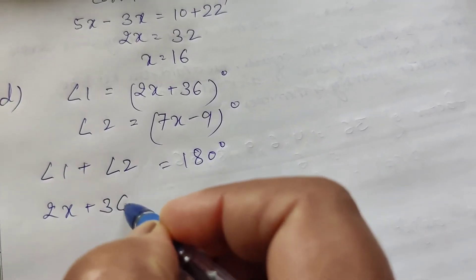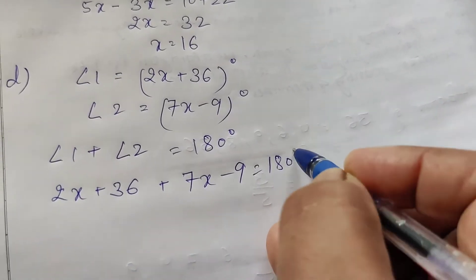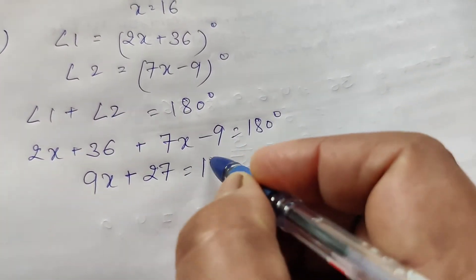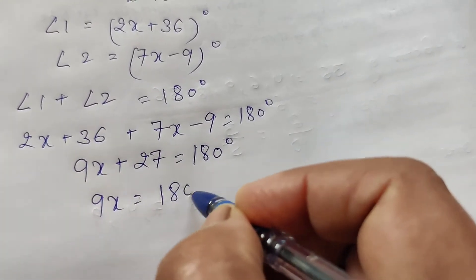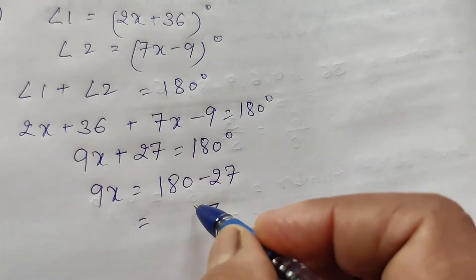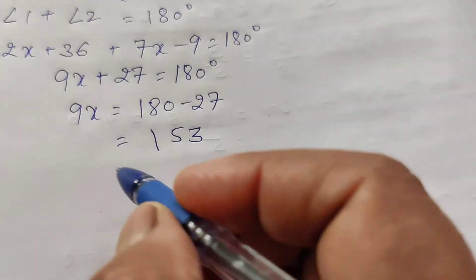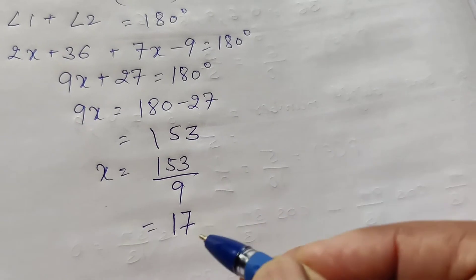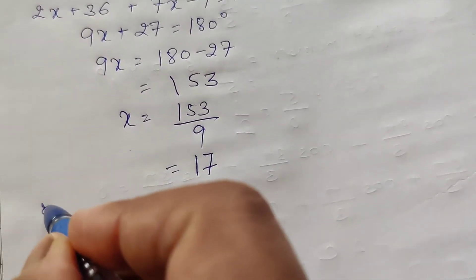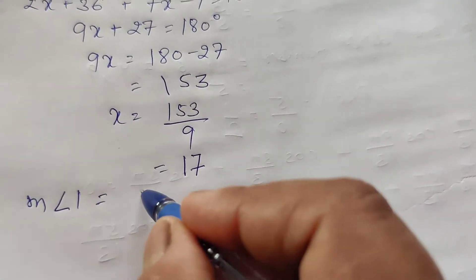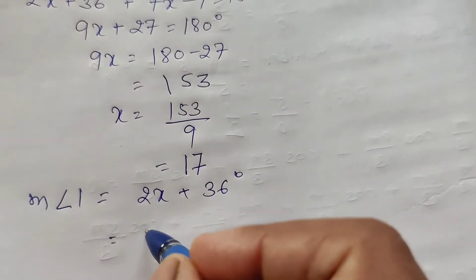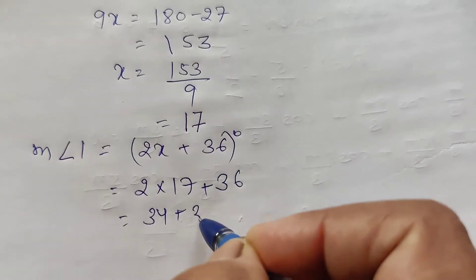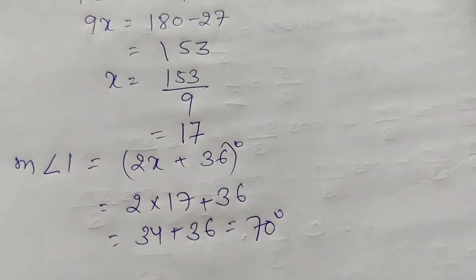Solving: 9X + 27 = 180°, so 9X = 153, giving X = 17. Then angle 1 = 2(17) + 36 = 34 + 36 = 70°.